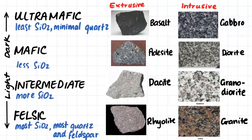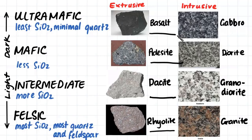We can also categorize rock into whether it is intrusive or extrusive. Intrusive rock shows crystal structure, while extrusive rock shows minimal crystal structure because it cooled so quickly. Rhyolite and granite have very similar chemical compositions, as do dacite and granodiorite, andesite and diorite, and basalt and gabbro — they just look different because they've cooled and solidified in different environments.